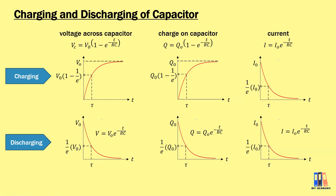One last important thing: the time constant, equal to RC, is defined as the time required — for increasing patterns — to increase to about 63% of the maximum value (maximum charge or maximum potential difference/EMF). For decreasing pattern graphs such as current, V, and Q during discharging, the time constant is the time required for the quantity to drop to 37% of its initial value.